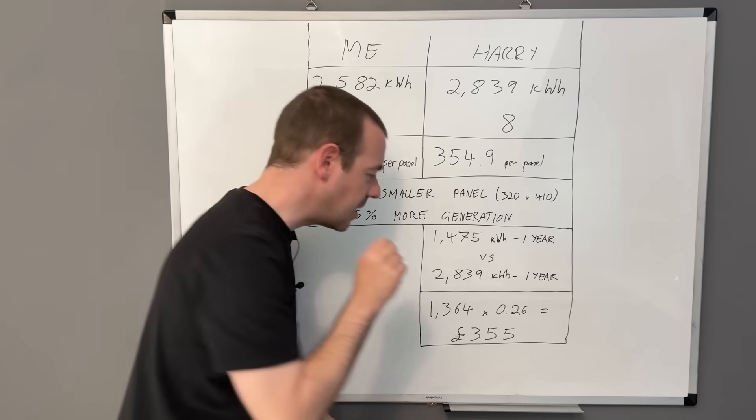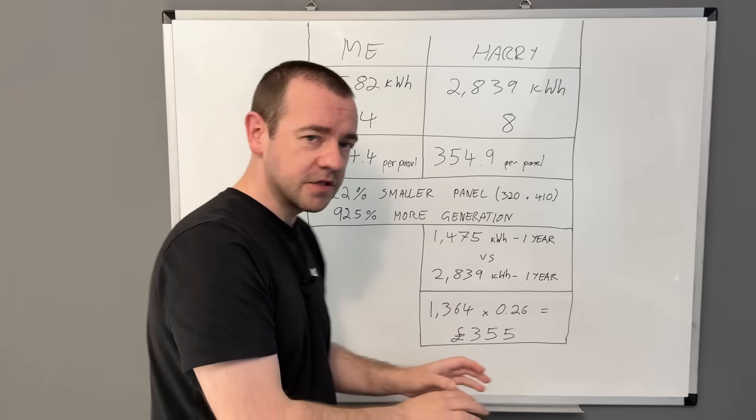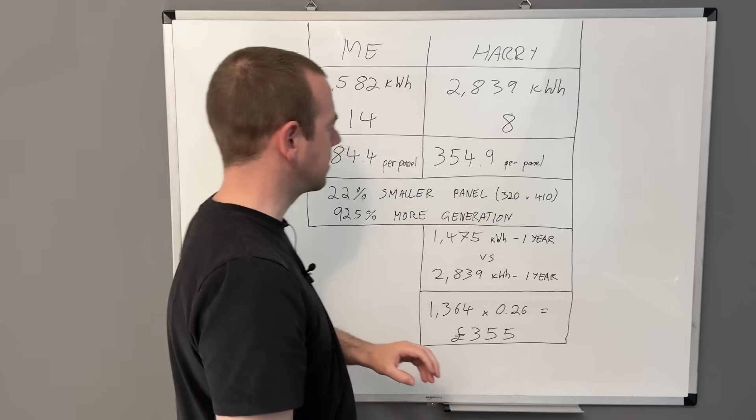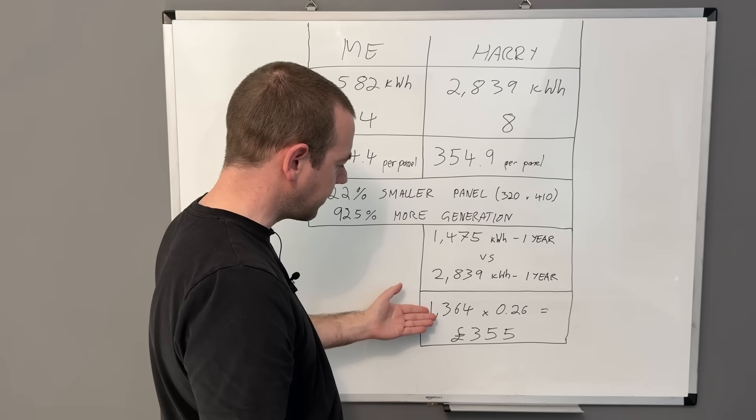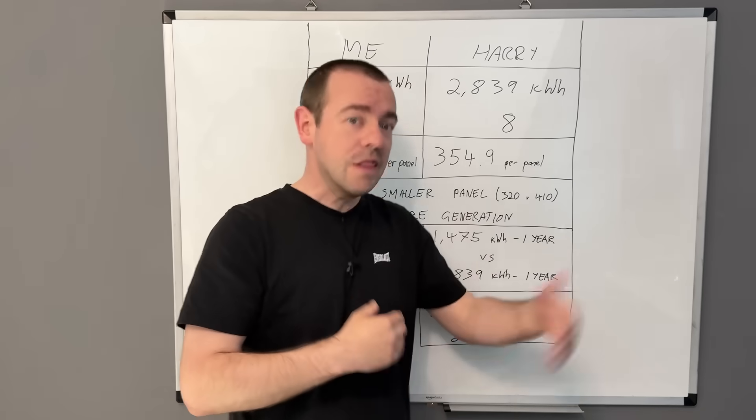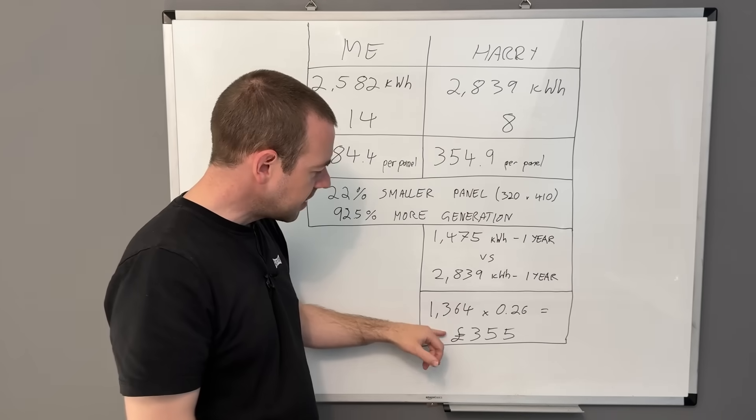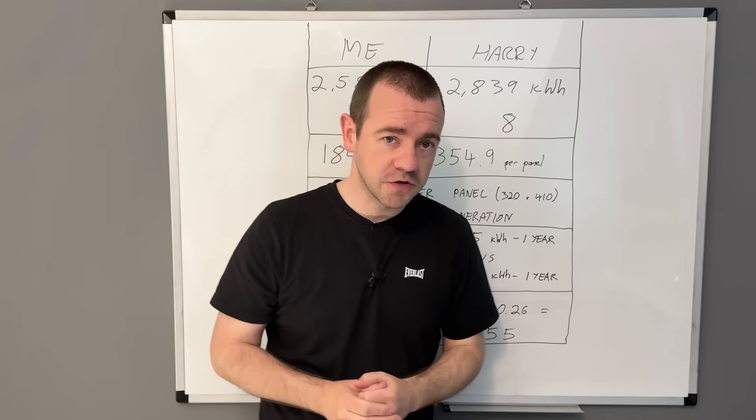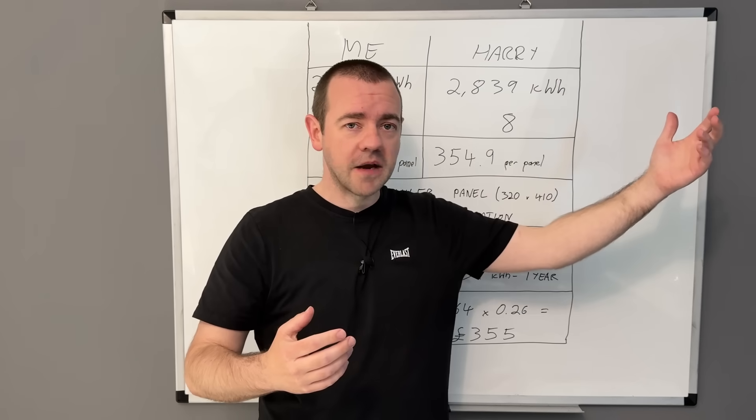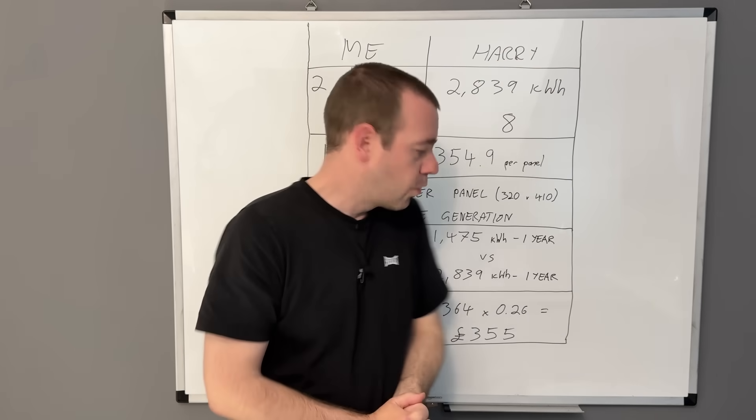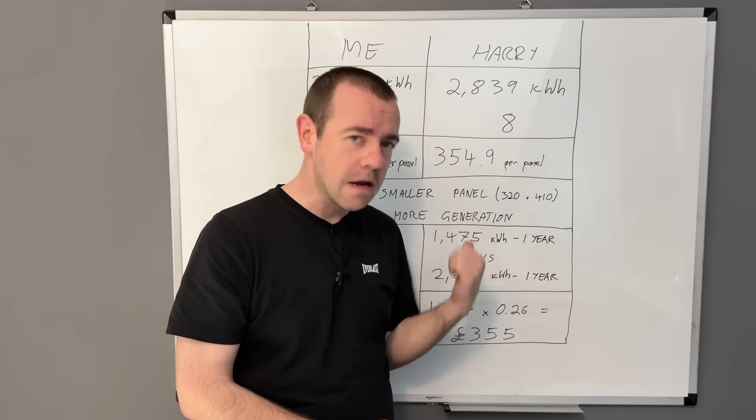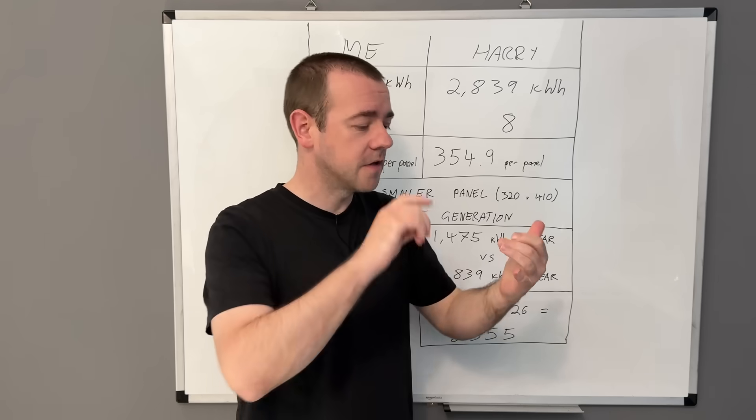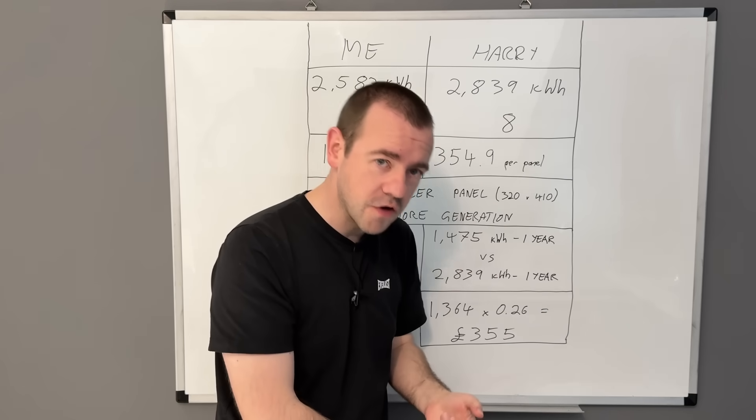He generated 2,839 but in this theoretical scenario would have only generated 1,475. There's a difference of 1,364 kilowatt hours. At 26 pence per kilowatt hour average UK price, he's in theory lost or wouldn't have generated and saved £355 per year with the cheaper system. Given it was £1,500 more expensive, you're looking at just over four years to get your money back, then you just win-win-win.